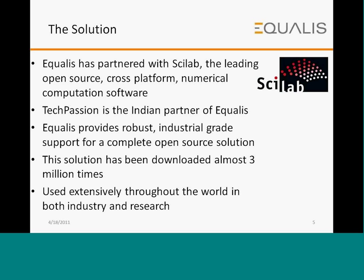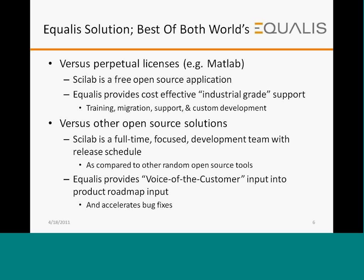Equalus is partnered with Scilab, which is a leading open source cross-platform numerical computation software. TechPassion is the Indian partner of Equalus. Equalus provides robust industrial-grade support for a complete open source solution that has been downloaded almost three million times and is used extensively throughout the world in both industry and research. Equalus brings together the best of both worlds: compared to perpetual licenses like MATLAB, Scilab is free and open source, while Equalus provides cost-effective industrial-grade support for training, migration, support, and custom software development. Compared to other open source solutions, Scilab has a full-time focused development team with a release schedule, and Equalus provides voice-of-the-customer input to the product roadmap and accelerates bug fixes.